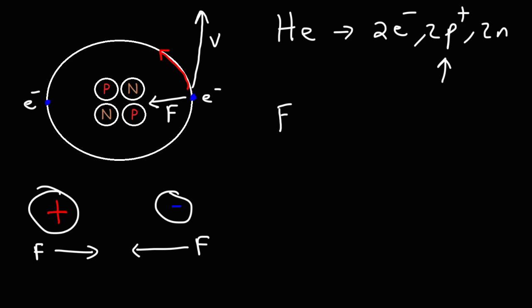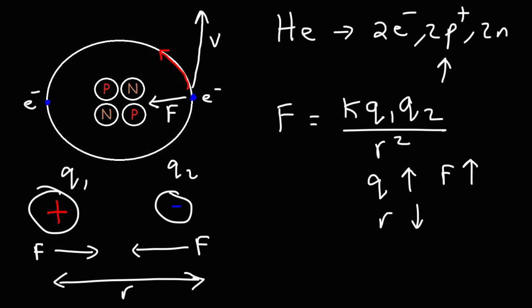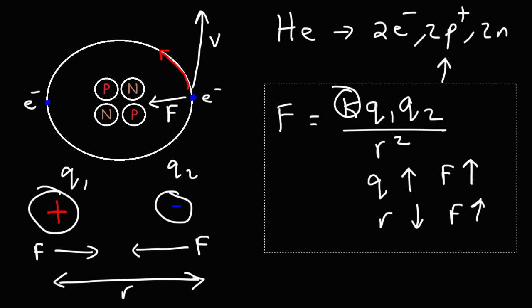The equation that describes the electrostatic force between charged particles is: F = kQ1Q2 / r². Q represents the magnitude of the charges — if you increase the magnitude of the charge, the electrostatic force between them will increase. The second factor is the distance: if you decrease the distance, the electrostatic force will increase. K is a constant, so we don't need to focus on that here.